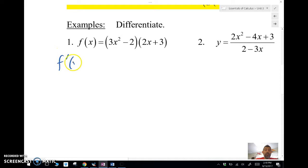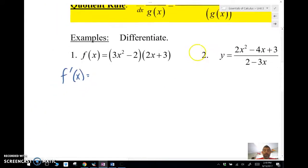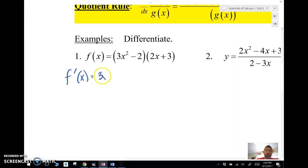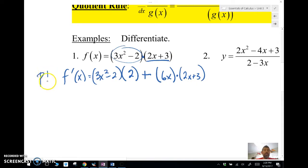So our product rule says we're going to take the first one, which is f of x, 3x squared minus 2. Here's the product right there. Times the derivative of the second. So the derivative of this is 2. Plus the derivative of the first one, so the derivative of 3x squared minus 2 is 6x, times the second one, 2x plus 3. That would be our derivative. This is the product rule.